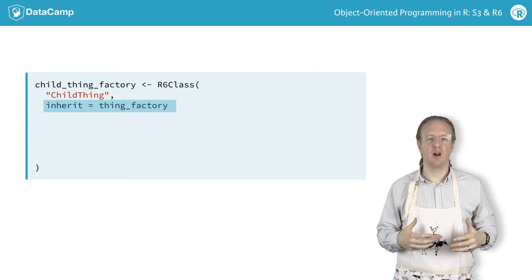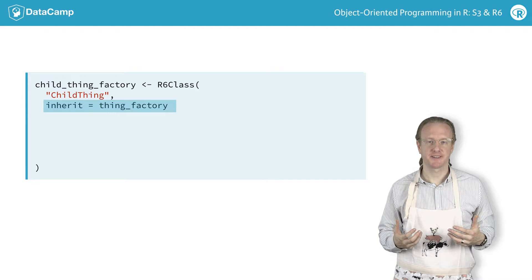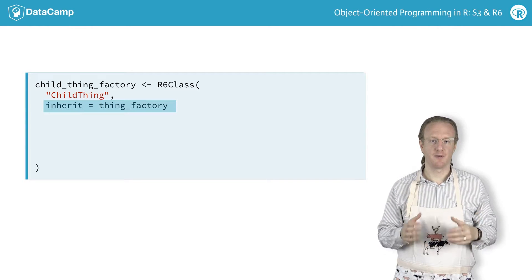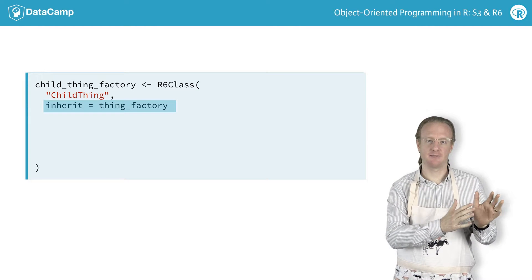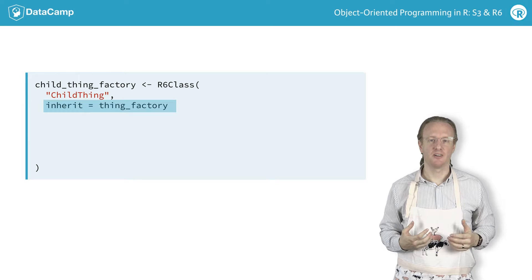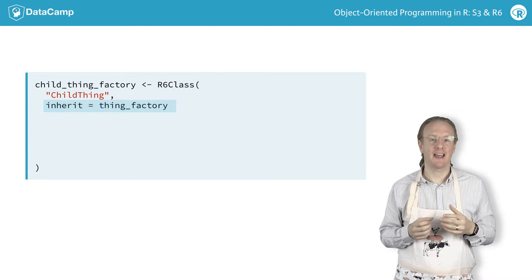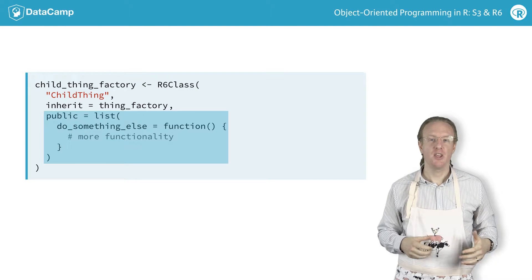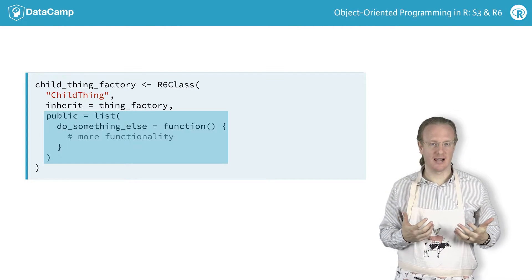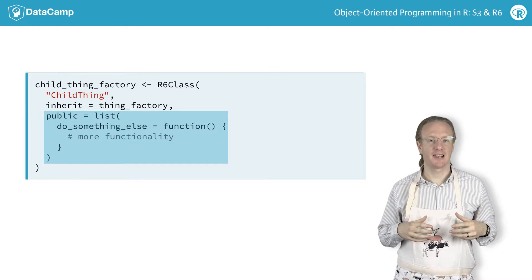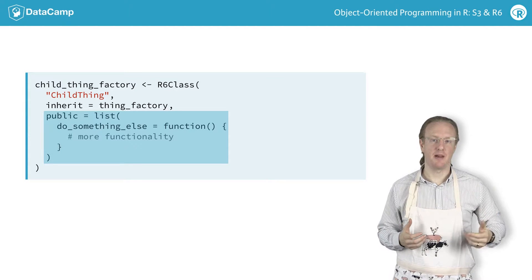All of the data and functionality of the parent class is passed on to the child — that is, all the fields from the private, public, and active elements. So, without defining anything extra, the child thing already has two private data fields and a method. You can add any additional functionality that you like to the child. Now, the child class has everything that the parent has and an extra method.